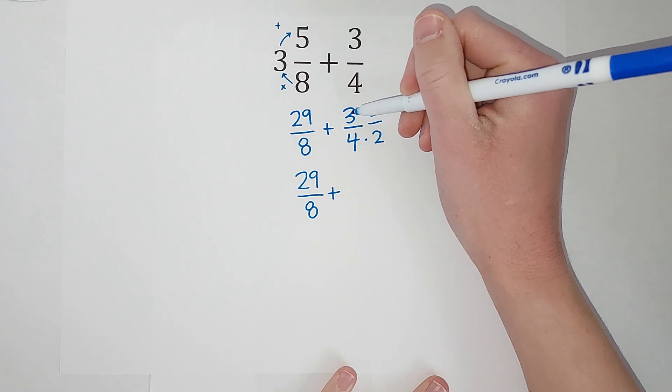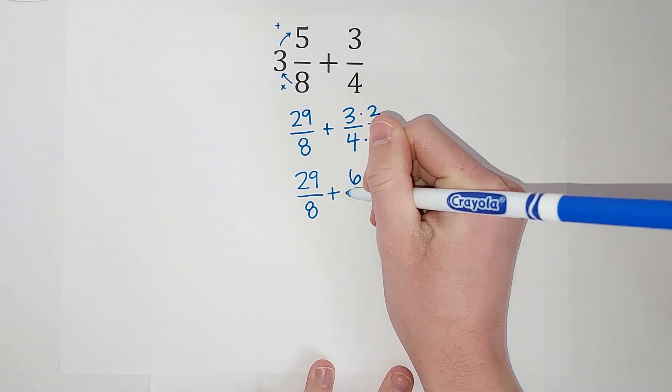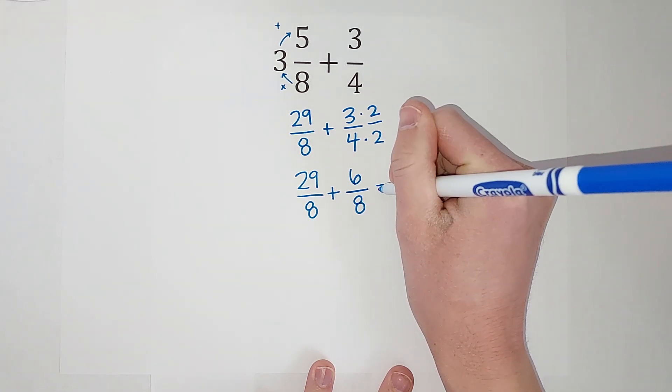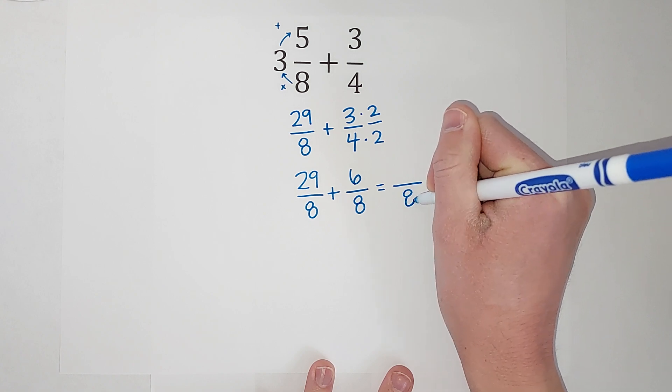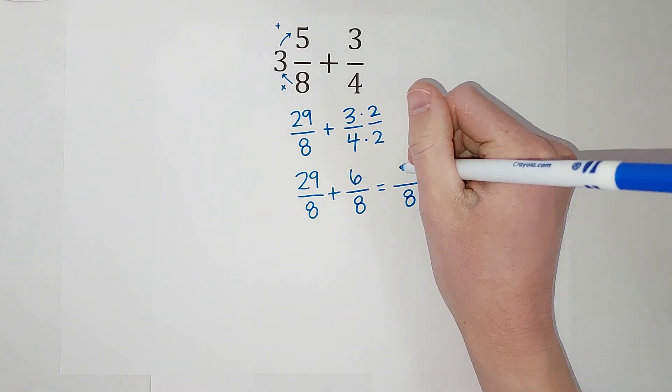So now we're going to multiply this, so 3 times 2 gives me 6, 4 times 2 gives me that 8 I was looking for. Happy day, our denominators are both 8, so when I add these my denominator stays 8. That's why we needed them to be the same. Then we can add our numerator, so 29 plus 6 gives me 35.